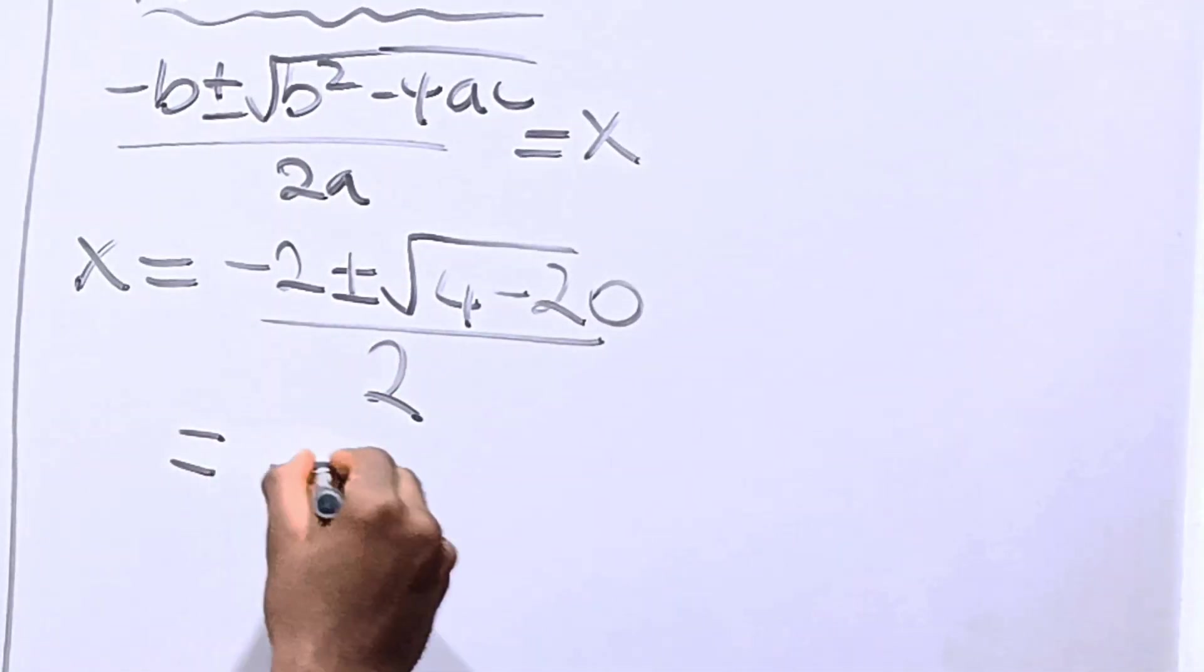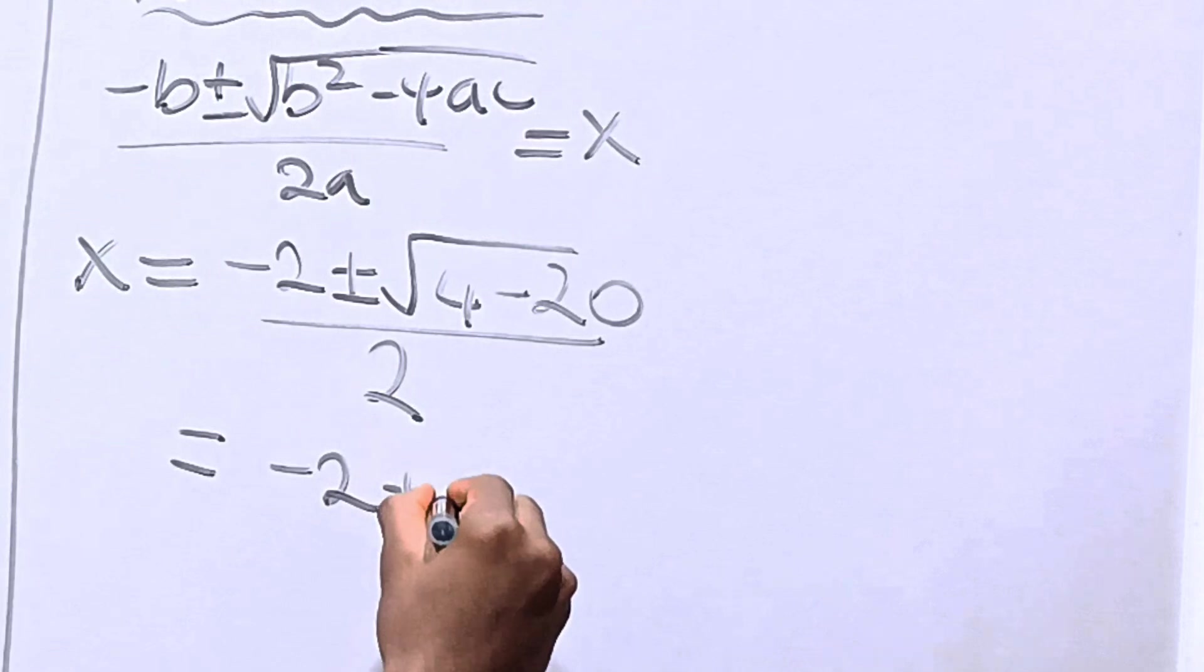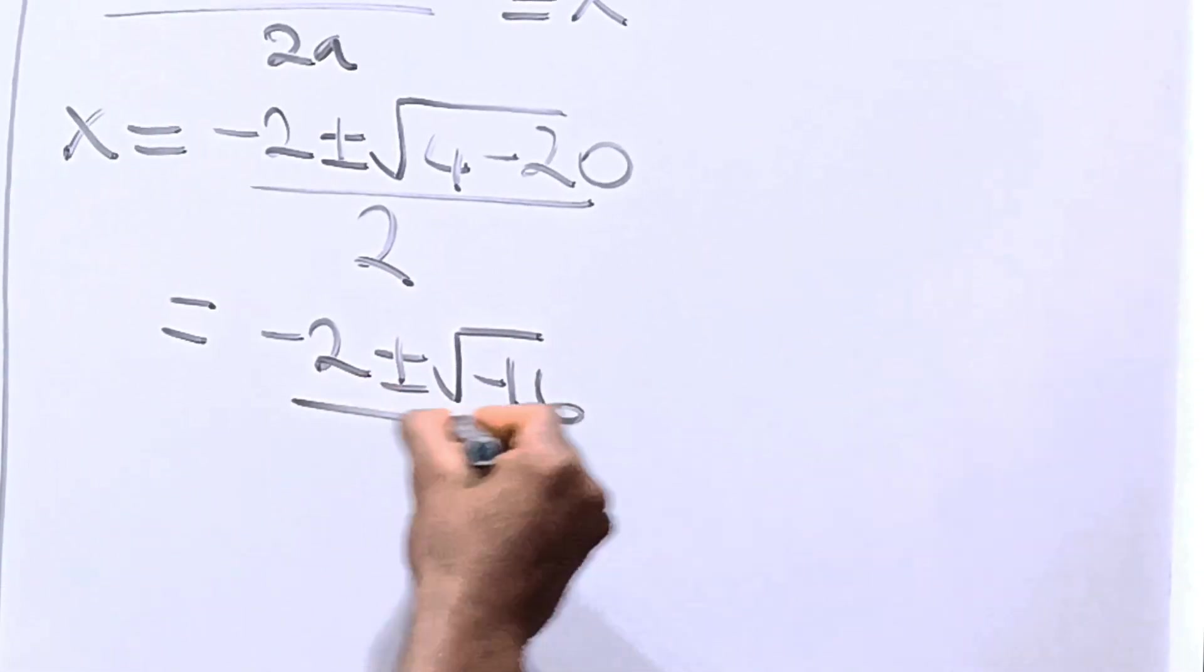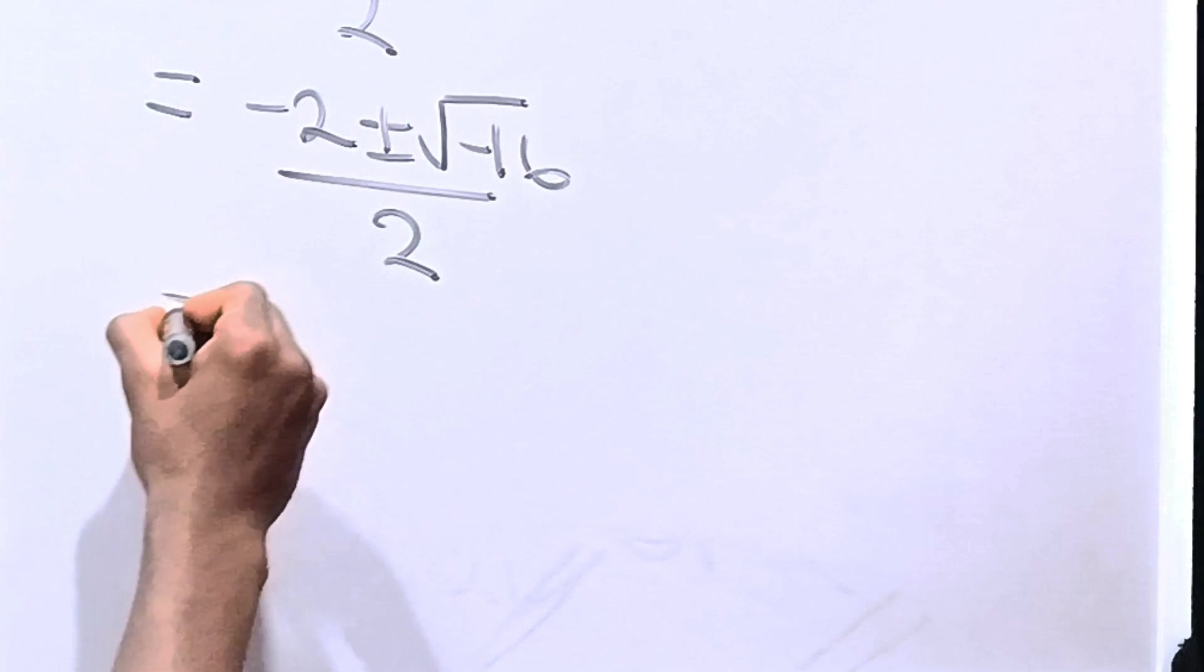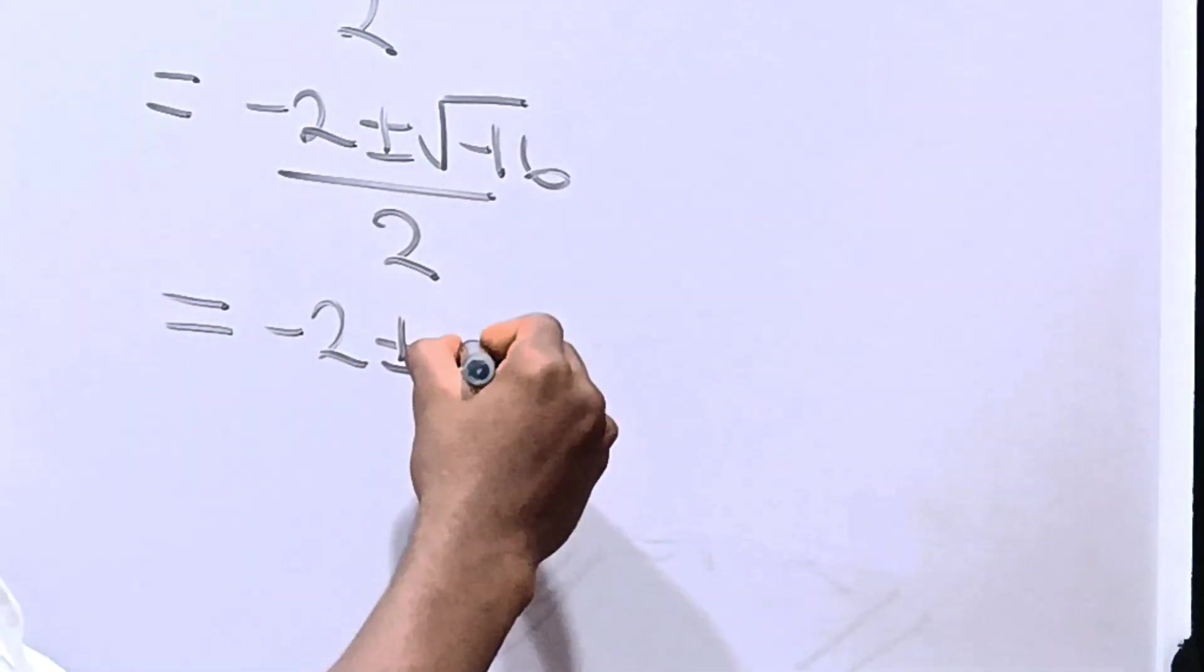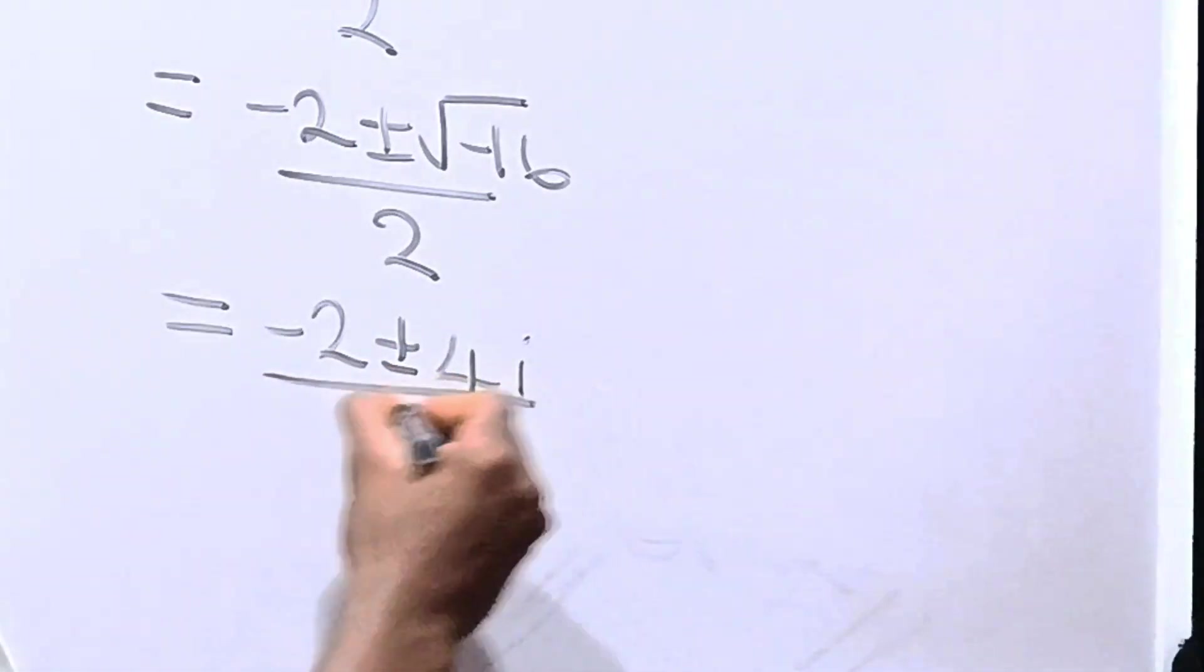This is equal to negative 2 plus or minus square root of negative 16 over 2. This becomes equal to negative 2 plus or minus 4i all over 2.